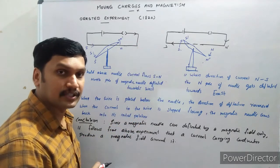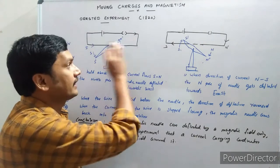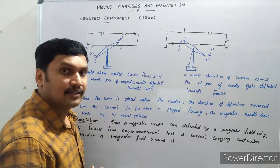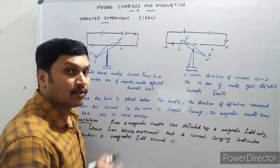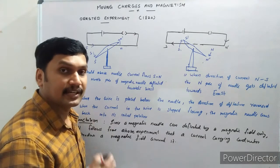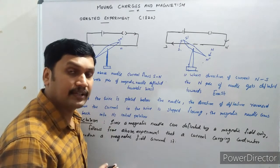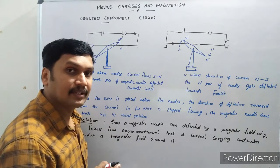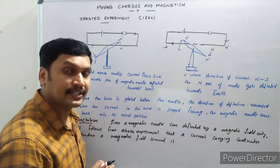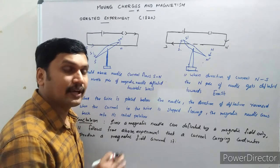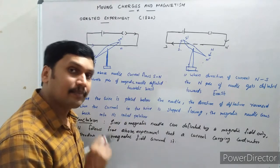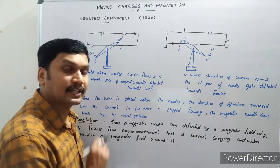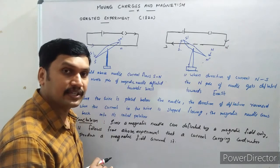We know that in a current-carrying conductor there are moving charges — the current is actually due to moving charges. So Oersted concluded that a moving charge can produce a magnetic field. The source of magnetic field is a moving charge, and every current-carrying conductor can produce its own magnetic field.